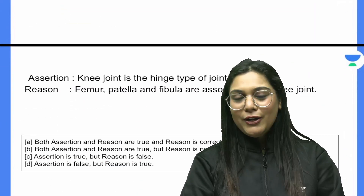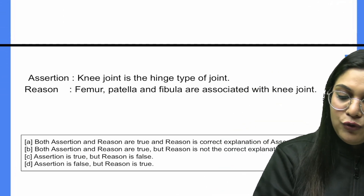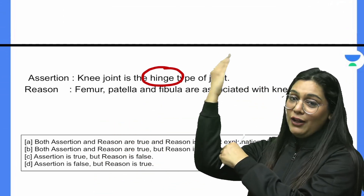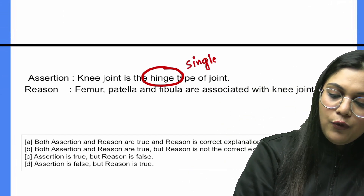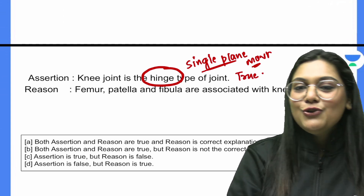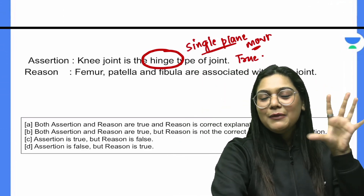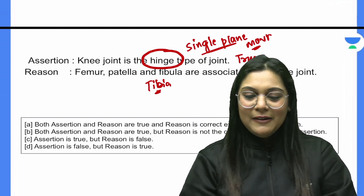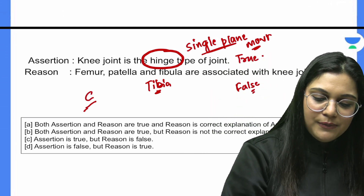Question 1: Knee Joint — our pair of joint. The Knee Joint is a hinge type of joint. Hinge joint means movement occurs in a single plane only — like your elbow joint goes only up and down. This is a true statement. Now, femur, patella, and fibula are associated with the knee joint — this statement is a little wrong because it has forgotten the tibia. Since tibia is missing, this statement is false. One true and one false gives us C as the answer.